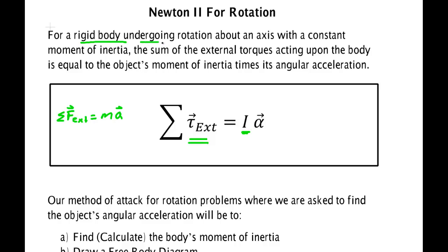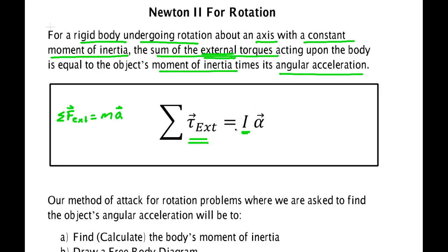We've got a rigid body undergoing rotation about an axis with a constant moment of inertia, so we can use this form. The sum of the external torques can't make an object rotate on its own — contrary to certain Wile E. Coyote cartoons where they just begin spinning in space. They have to have an external torque act on them. That external torque is equal to the object's moment of inertia I times its angular acceleration alpha.